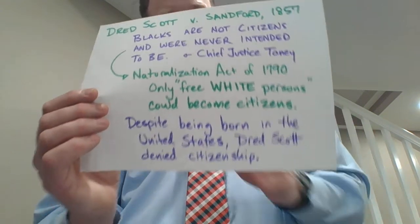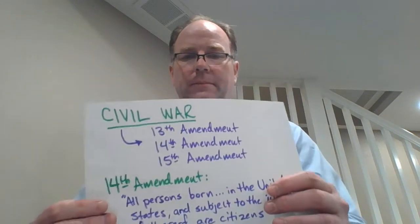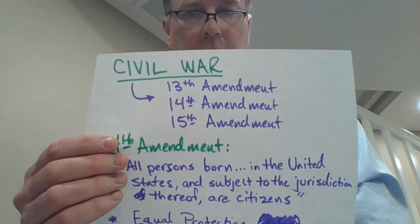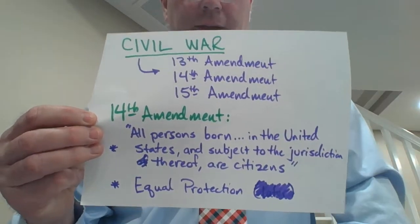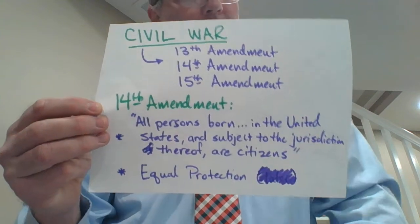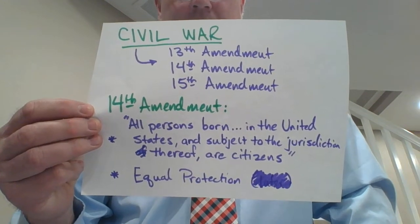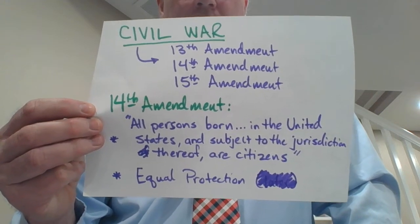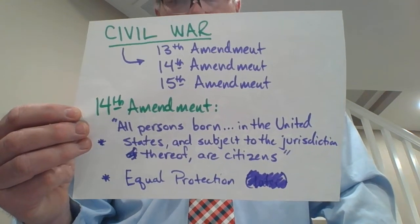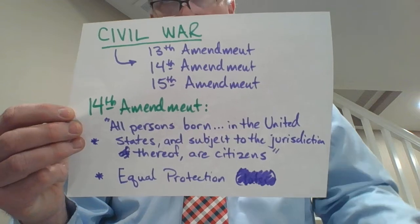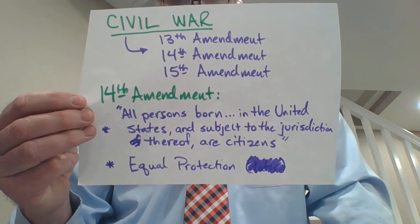The Dred Scott case in 1857 was a major instigating factor leading to the Civil War. The Civil War resolved the question of slavery as its primary cause, and that was resolved through congressional action with the 13th, 14th, and 15th Amendments to the Constitution. We've talked about these before, but now we're going to focus in on the 14th.